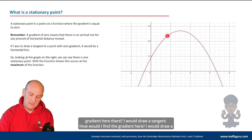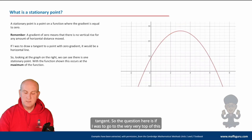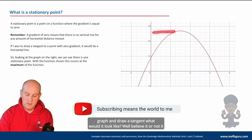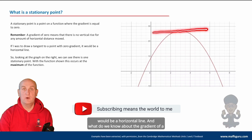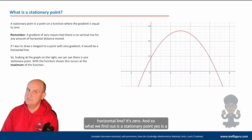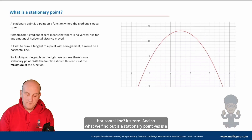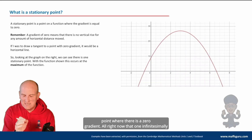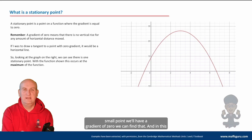How would I find the gradient at a point? I draw a tangent. So the question is: if I go to the very top of this graph and draw a tangent, what would it look like? Well, it would be a horizontal line. And what do we know about the gradient of a horizontal line? It's zero. So a stationary point is a point where there is a zero gradient — that one infinitesimally small point will have a gradient of zero.